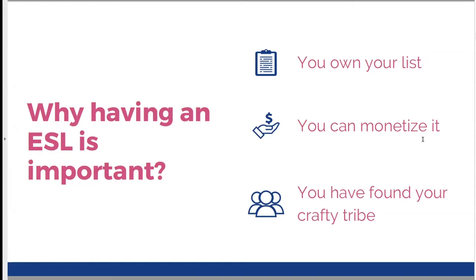Now let's get into the nitty-gritty of the training — the whole reason why you came today — to find out more about an email subscriber list and why it is super important. First of all, when you have an email subscriber list, you own your list. You can market to this list any time you want. You don't have to rely on other people's platforms such as Facebook, Instagram, or YouTube. All of those platforms could go away at any time, and if you don't have your audience's contact information — namely their email — you've lost the opportunity to market to them.